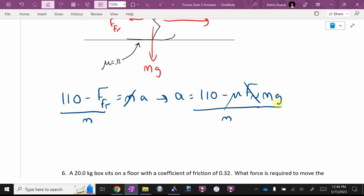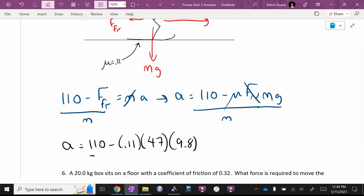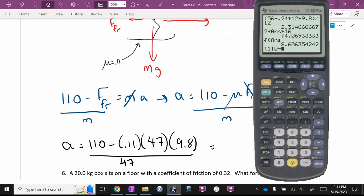If I go to numbers now, it's going to be 110 minus mu 0.11, M 47 times 9.8. You could figure out friction ahead of time. You might notice I like to do everything in one step. Hashtag nerd. Bracket 110 minus 0.11 times 47 times 9.8, close off the top, divided by 47.